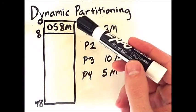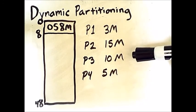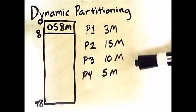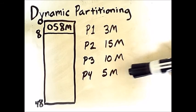As before, we reserved the first 8 megabytes of memory for the operating system, but now we have several processes making memory requests in this order. Process 1 requests 3 megabytes, then process 2 requests 15, then process 3 requests 10 megabytes, and then process 4 will request 5 megabytes.